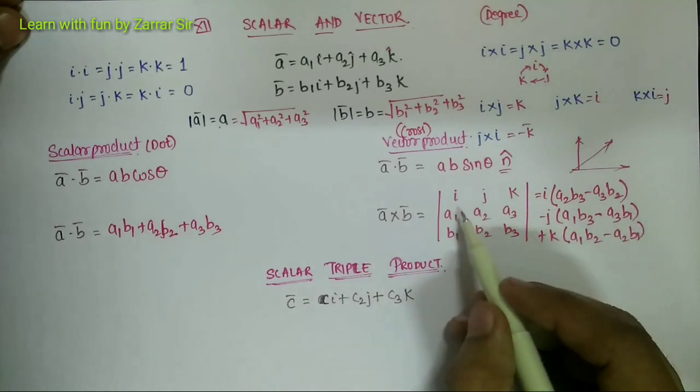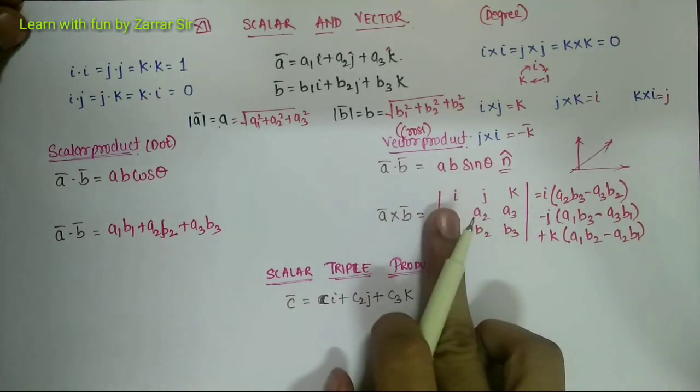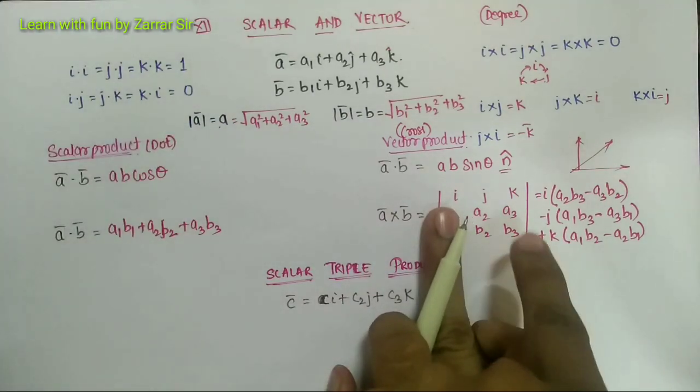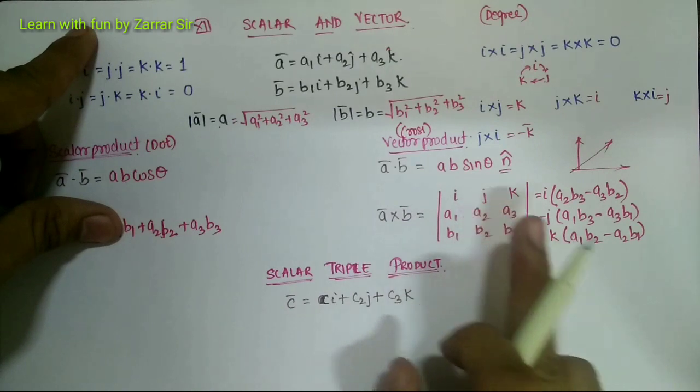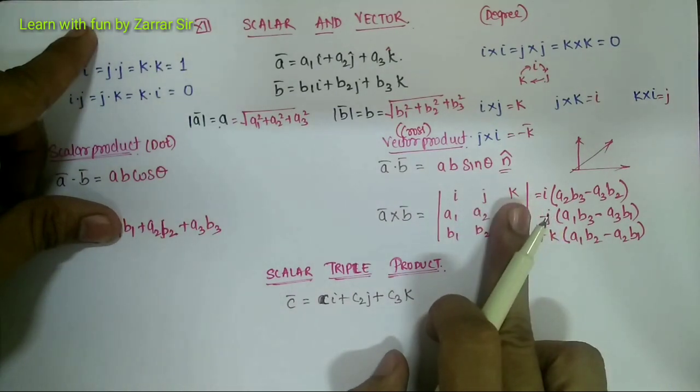Which is very simple: you consider one vector. If I consider i, cross multiply these two terms. If I consider j, cross multiply these two terms. If I consider k, cross multiply these two terms and subtract.